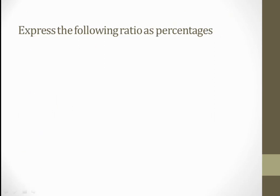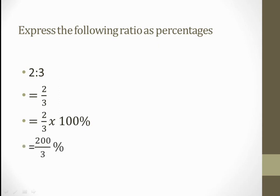Express the following ratios as percentage. The ratio is given and we need to write it as a percentage. First I write it as a fraction: 2 by 3. To convert into percent, I multiply with 100 percent. 2 times 100 is 200 upon 3. So I get 200 over 3 percent. This is our required answer.